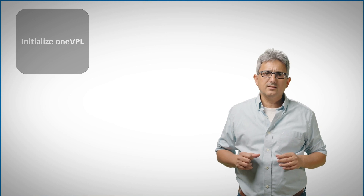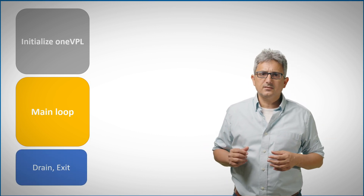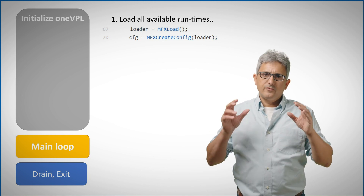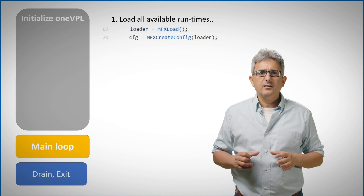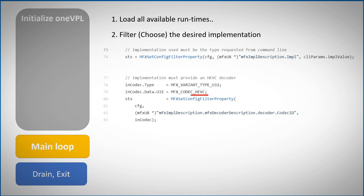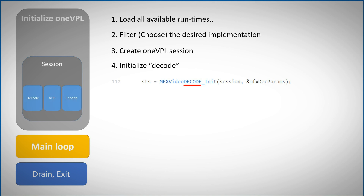The basic flow of OneVPL is not very different from MIDI SDK. You need to set all the parameters and initialize, then the main loop to decode frame after frame, and when done, drain all the buffers and exit. Initialization has a few steps: first, use a loader to load all available runtimes for the various devices in your system. There could be multiple implementations for a system. Then choose the desired implementation — CPU, GPU, or other. In this example we filter implementations looking for one that supports HEVC. Then we create a OneVPL session, which can include decode, encode, VPP video processing, or all of them together. In this example we initialize decode only, and we are all set for the main loop.